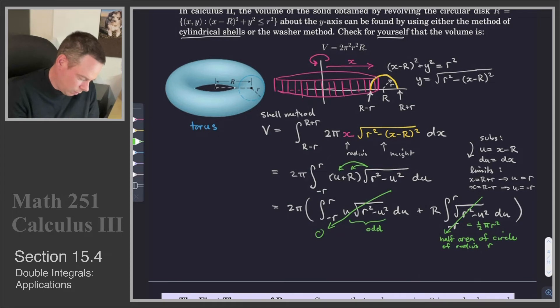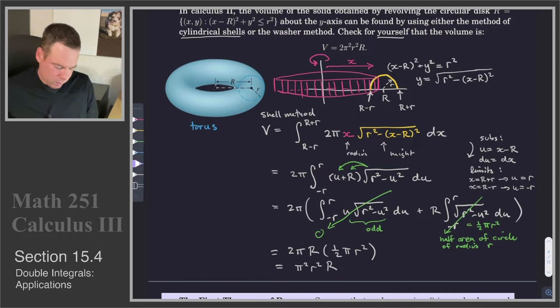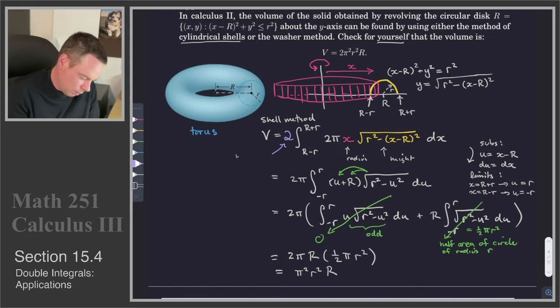And so now we're pretty much done, because this evaluates to 2π times R times ½πr². What we could do is say now we've got half of the torus, so multiply by 2. Or we could just stick the 2 in right at the beginning and say by symmetry, the volume of the torus is twice the volume of just the upper half. Then I have these extra 2's that carry all the way down.